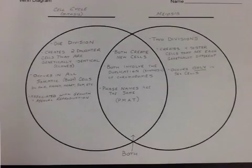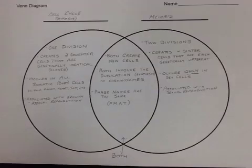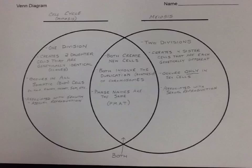Mitosis is associated with growth and asexual reproduction. Because it is asexual, all the cells that are created will be genetically identical clones of one another. Meiosis is associated with sexual reproduction, and because of that we end up with a varying gene pool, meaning organisms look different from one another. This aids later in evolution when we talk about natural selection.